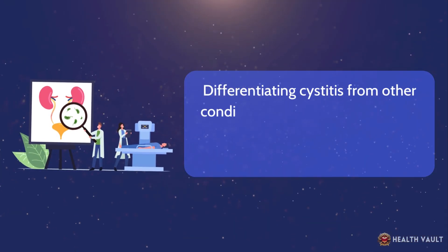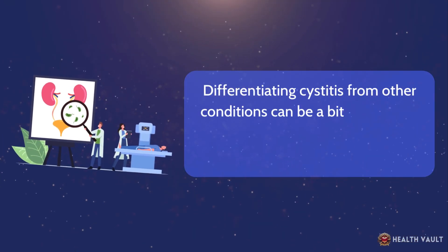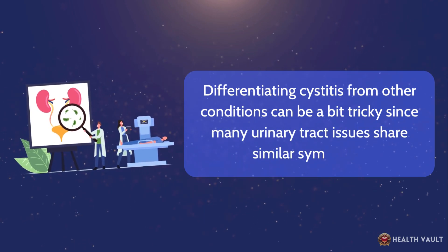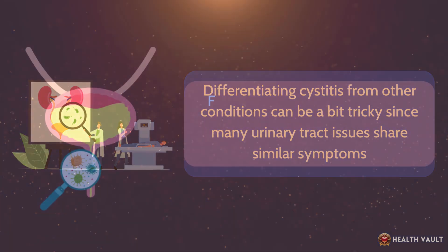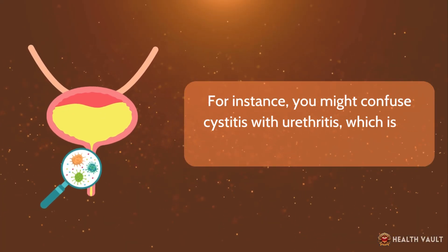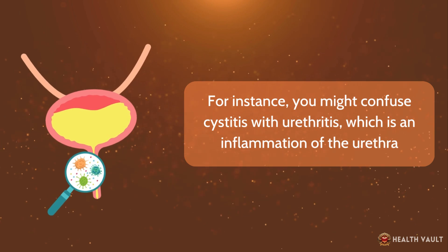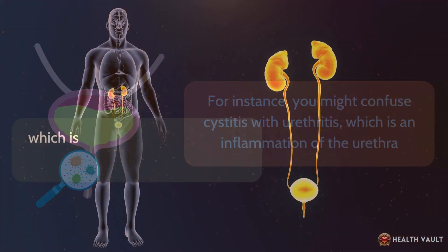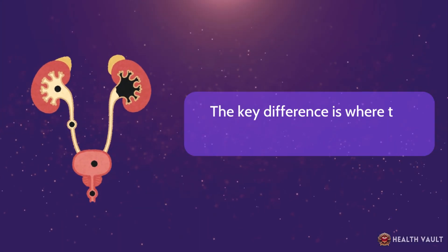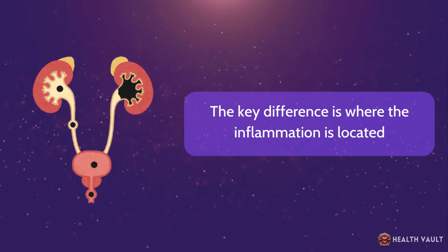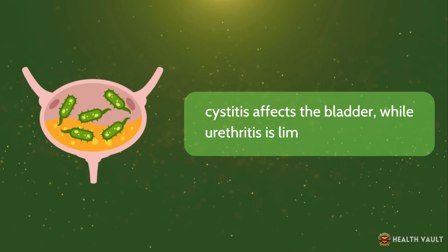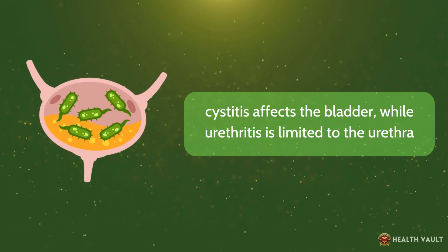Differentiating cystitis from other conditions can be a bit tricky since many urinary tract issues share similar symptoms. For instance, you might confuse cystitis with urethritis, which is an inflammation of the urethra — the tube that carries urine out of the body. The key difference is where the inflammation is located: cystitis affects the bladder, while urethritis is limited to the urethra.